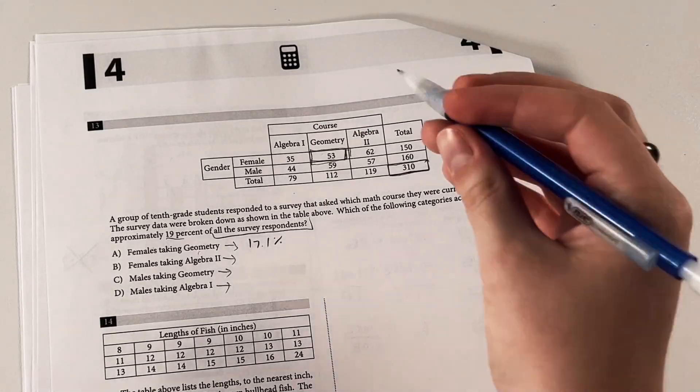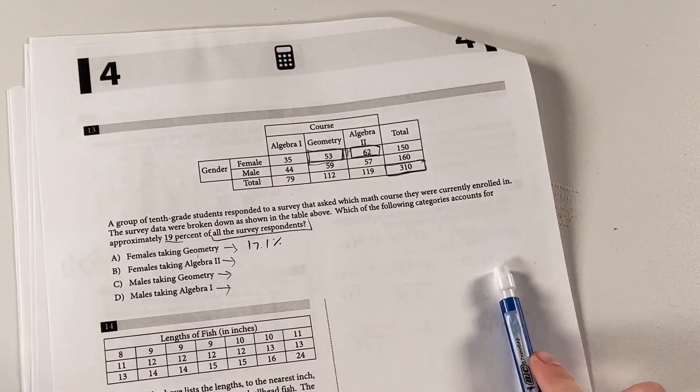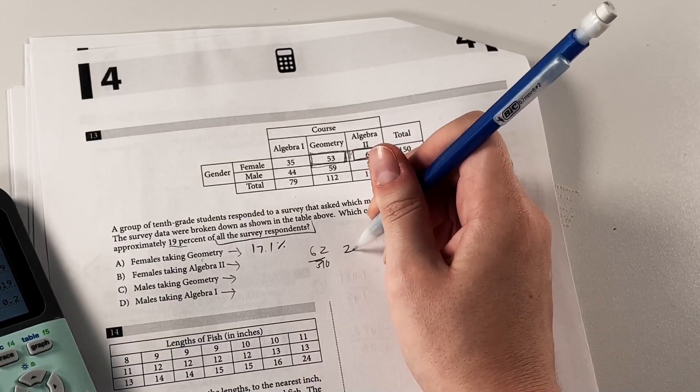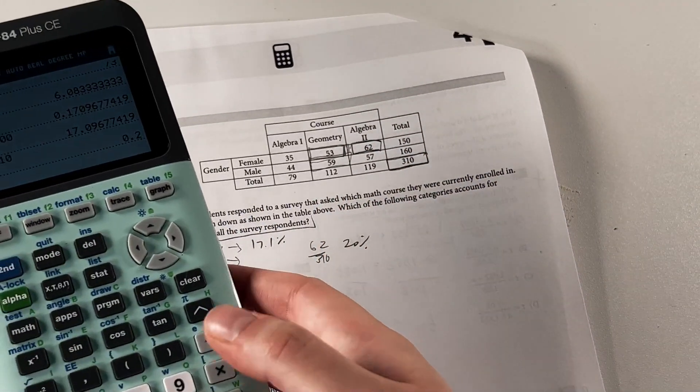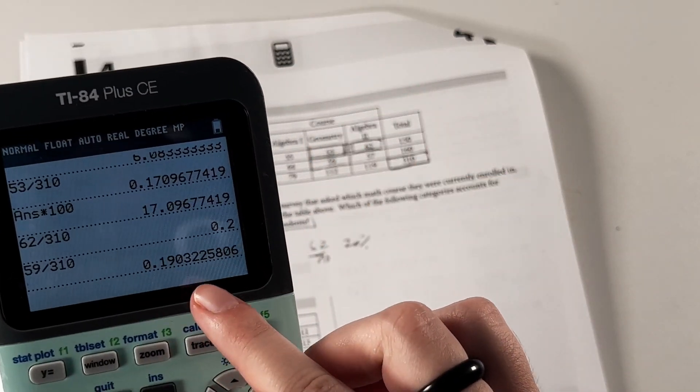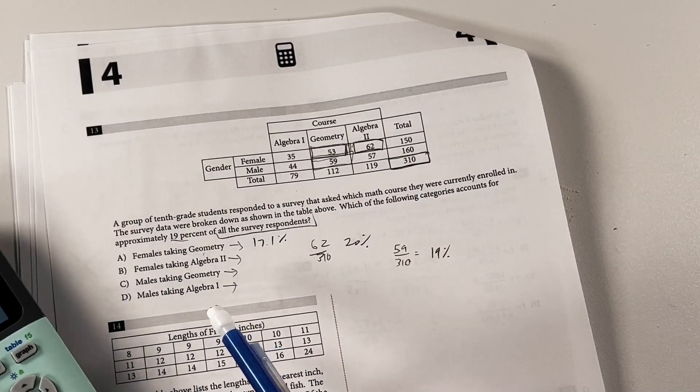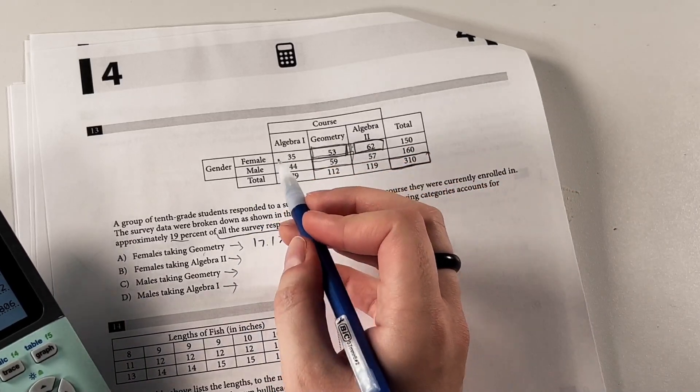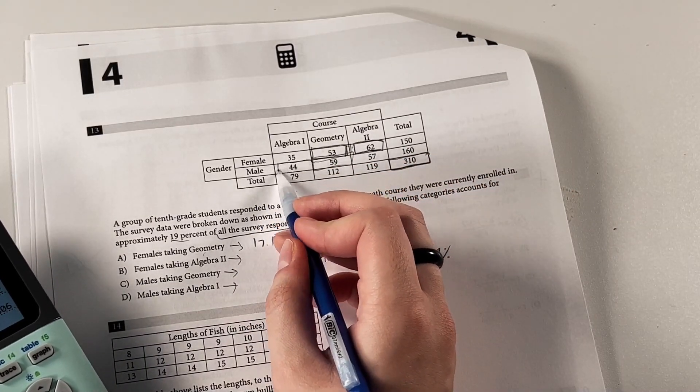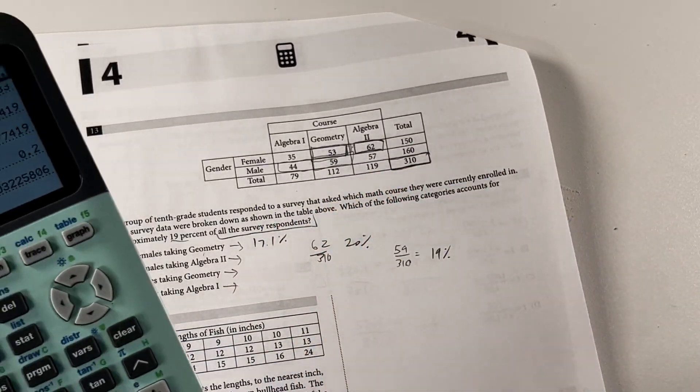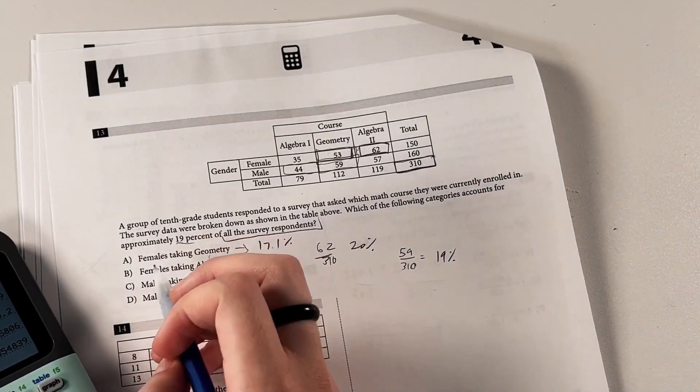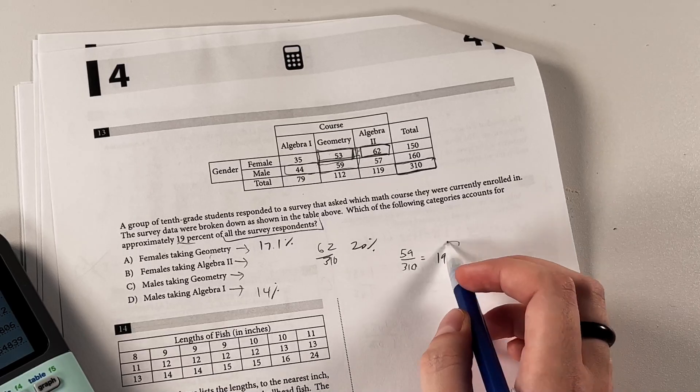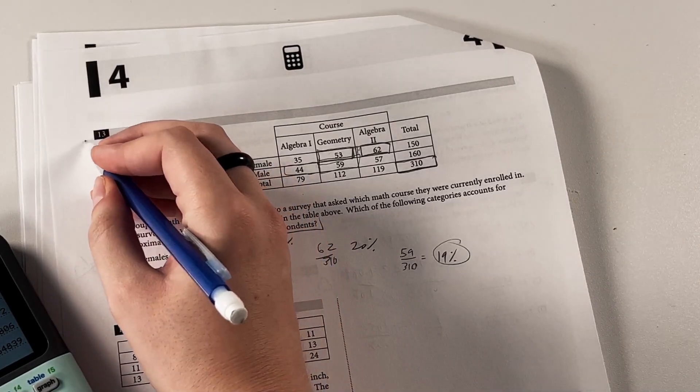Females taking algebra 2, it's going to be this box. So 62 divided by 310, that's going to be 20%. Males taking geometry, 59 divided by 310, that's going to be 19.0%. And then let's just check. Males taking algebra 1, 44 divided by 310. We already know that's going to be a lot less than 17%. Yeah, 14%. So yeah, the males taking geometry is going to be the closest number to 19, is accurate to a few sig figs there.